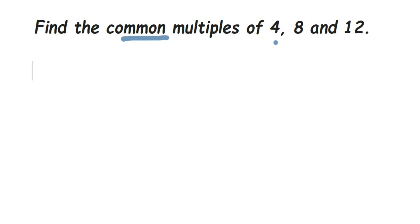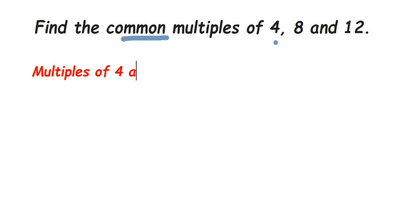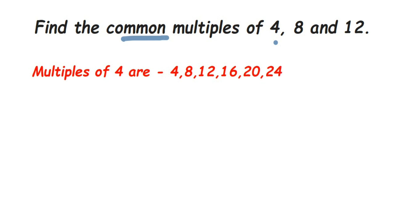Let's find the multiples of each number. Multiples of 4: just write down the 4 times table. 4 ones are 4, 4 twos are 8, 4 threes are 12, 4 fours are 16, then 20, 24, 28.